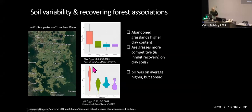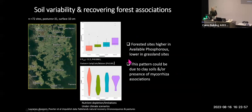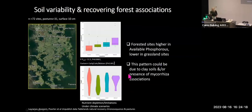pH on average was also significantly more alkaline in our pastures, though with a spread across different pasture sites. Interestingly, looking at available phosphorus, we find a reverse pattern where forested sites with mature rainforest have significantly higher available phosphorus compared to grassland sites. Total nitrogen showed no distinctive pattern. This pattern of higher available phosphorus in forested sites could be due to clay soils but also could be due to the presence of mycorrhizae associations.